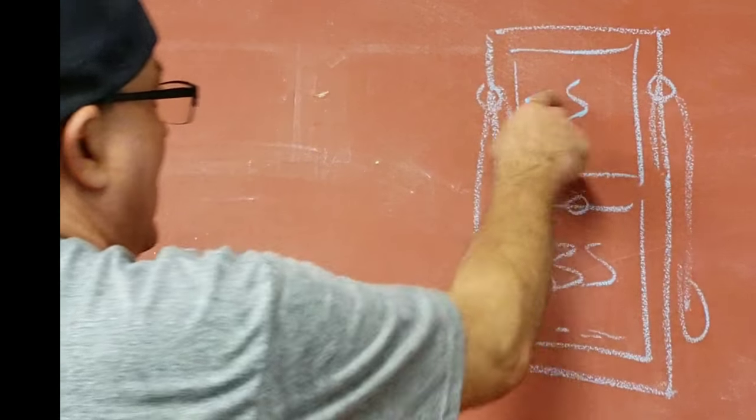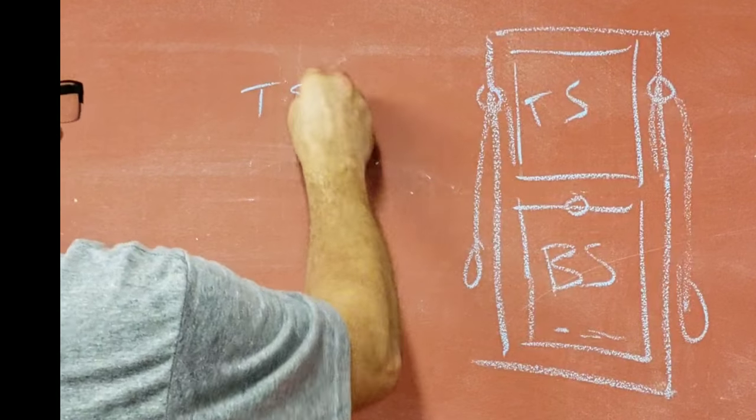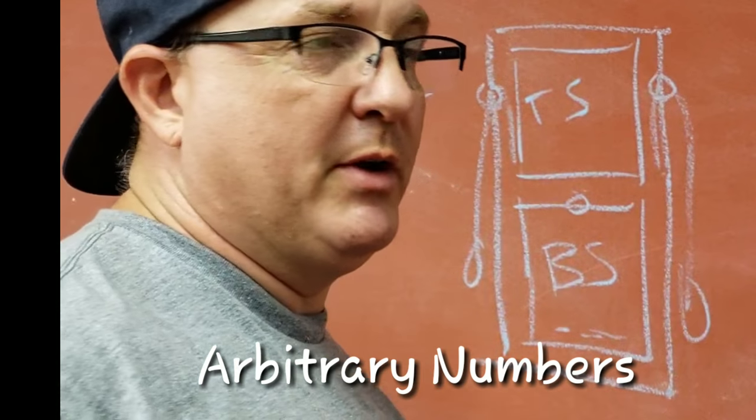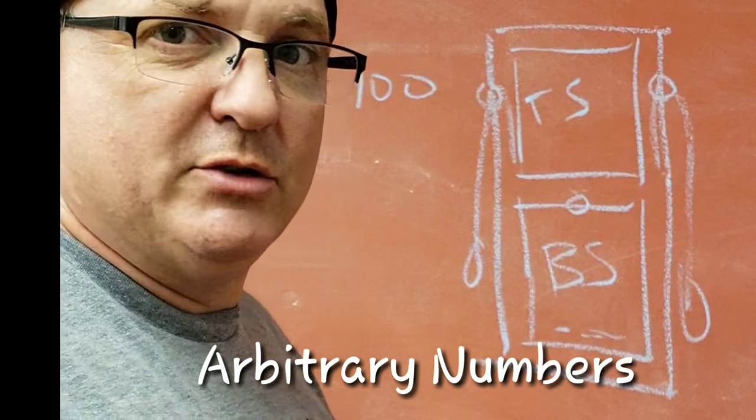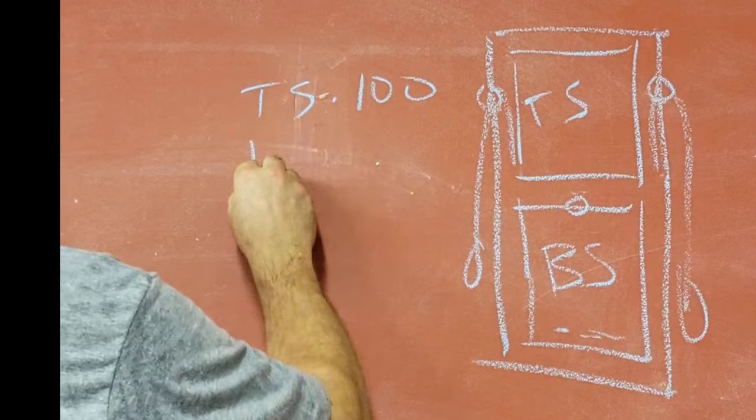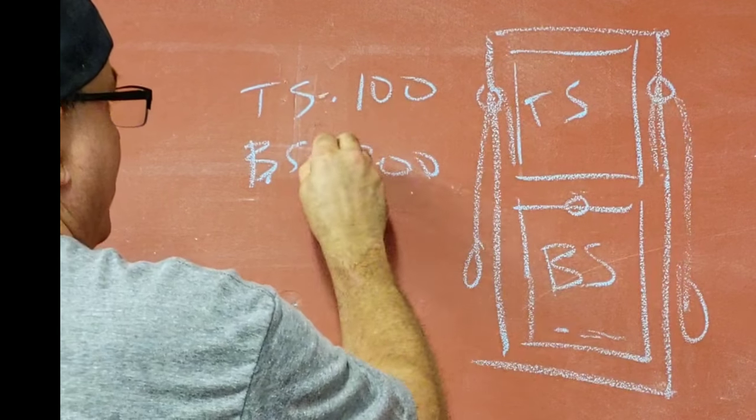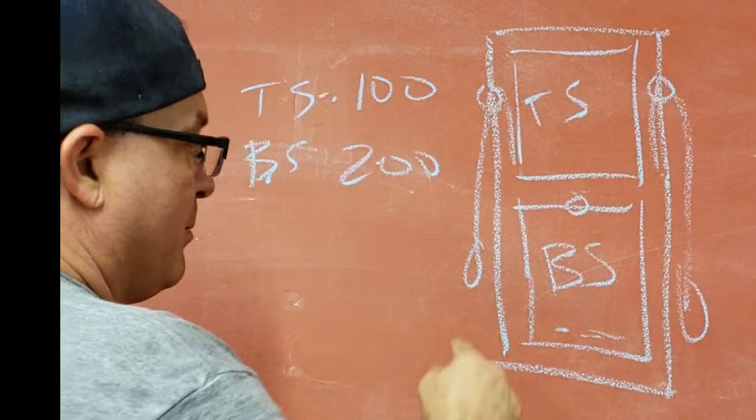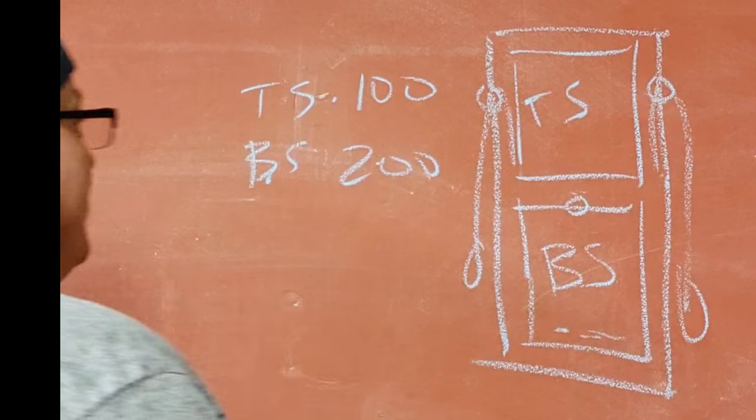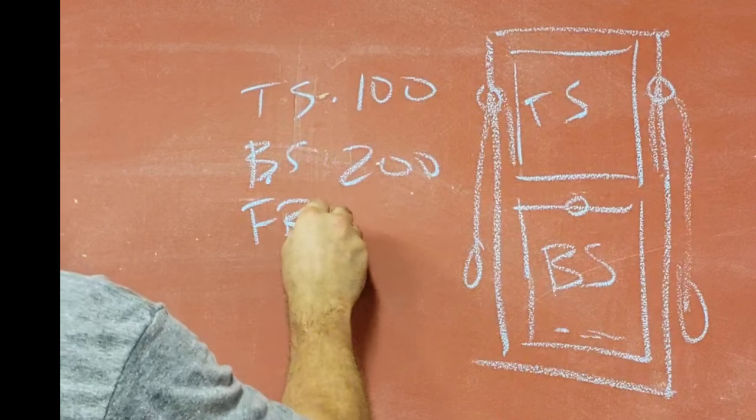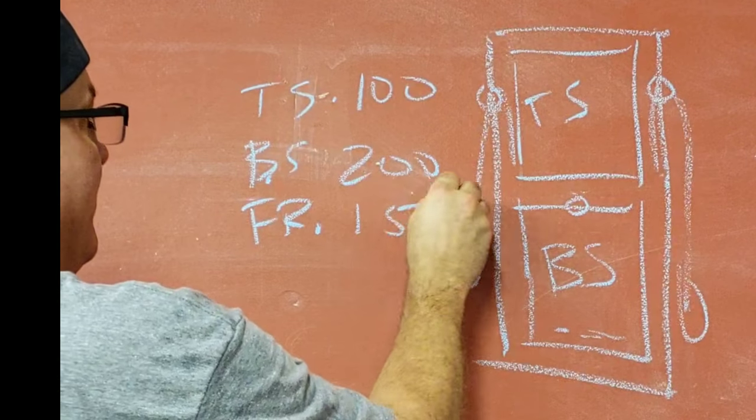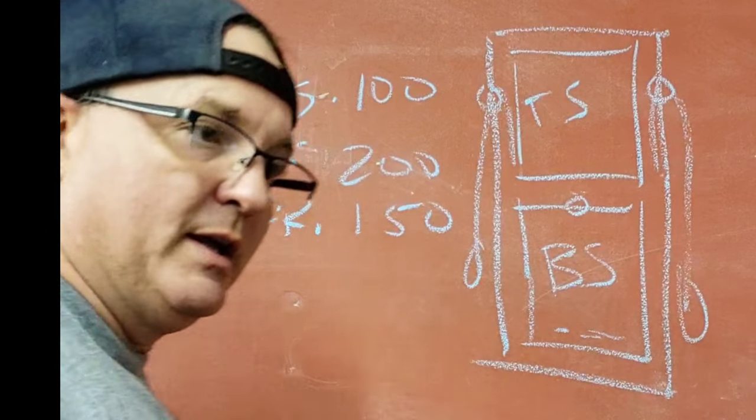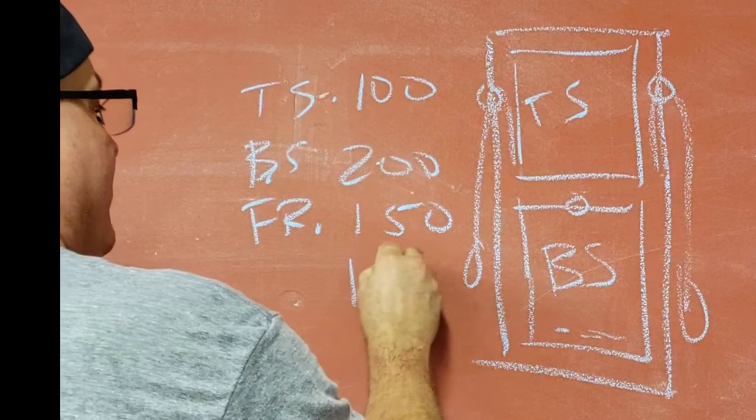So your top sash, let's say it's $100. You're going to charge $100 to restore the top sash. Now these aren't real prices, these are just making it up as I go. Say you're going to charge for the bottom sash $200. That's the price for your bottom sash. Now you need a price to restore the frame. Say you're going to charge $150 for that. And then the mechanics, get it working again up and down. Say you're going to charge $150 for that.